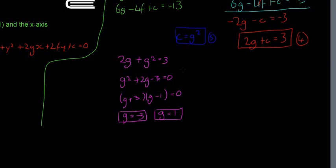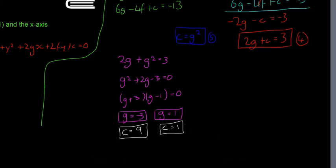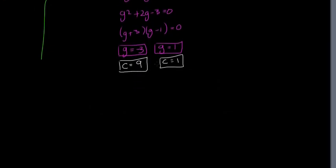Now we need our two values of c. Since c = g², when g = −3, c = (−3)² = 9, and when g = 1, c = 1² = 1. So we have two sets: g = −3 with c = 9, and g = 1 with c = 1. We get two different sets of g, f, and c because there are two circles.